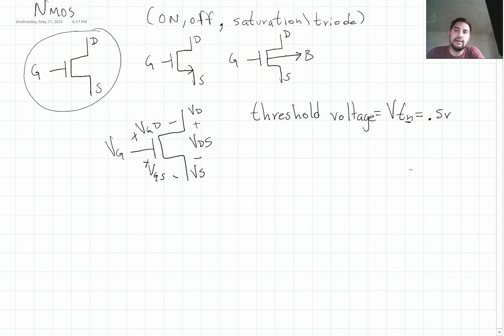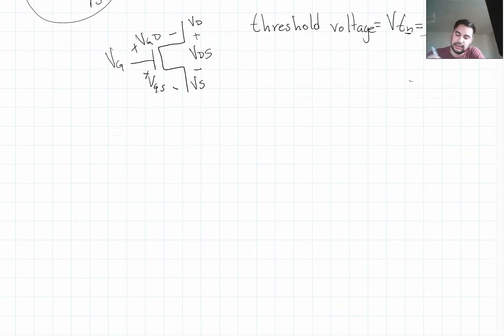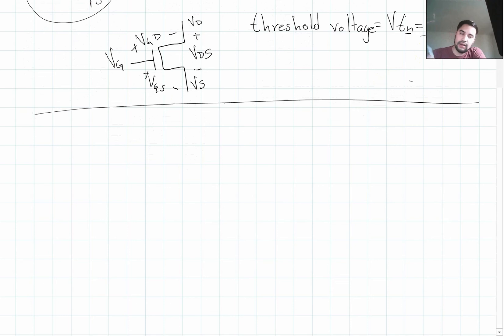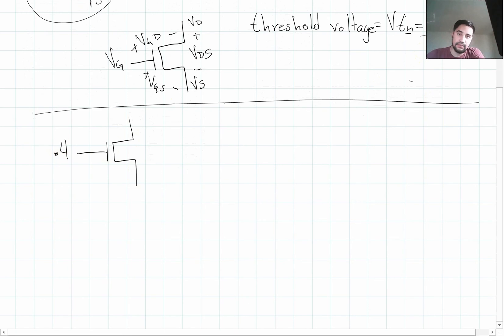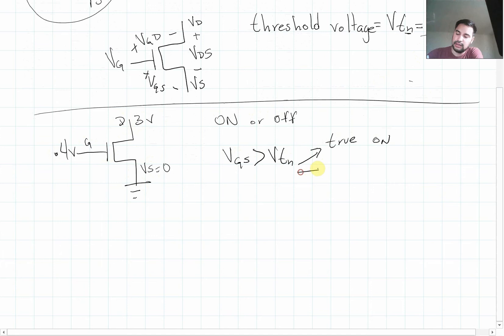This threshold voltage is given by the manufacturer. We're going to use it as 0.5 volts. So how do we know if the transistor is on or off? Basically, you want to know if VGS is greater than VTN, the threshold voltage. If this is true, then it's going to be on. If it's false, it's going to be off. Let's start with a simple example: say you have 0.4 volts on the gate, 3 volts on the drain, and the source is connected to ground.